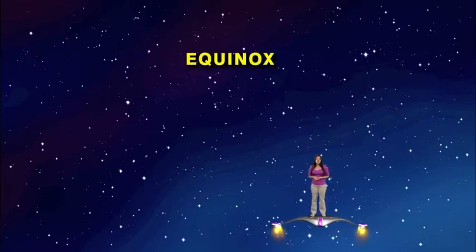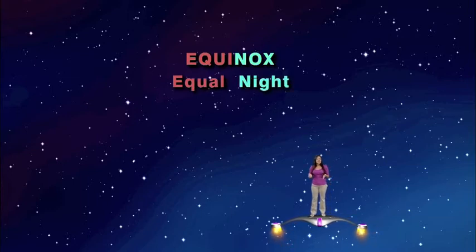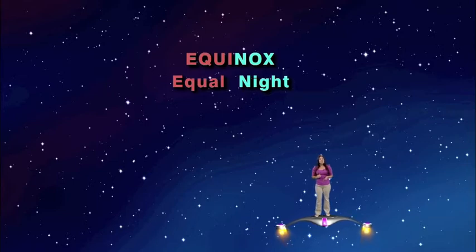Well, the word equinox comes from the Latin equi, which means equal, and nox, which means night. Which means that on the two days of the equinoxes, the hours of night are equal to the hours of daylight.